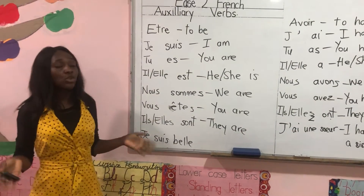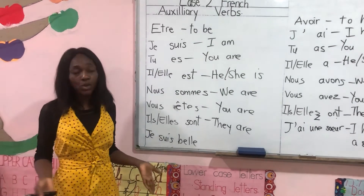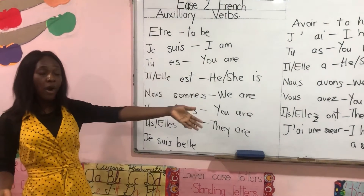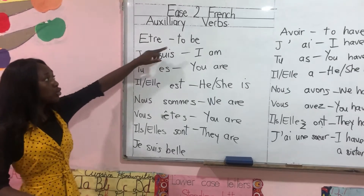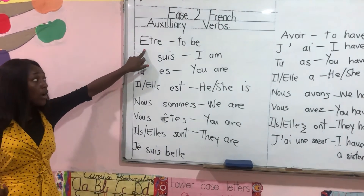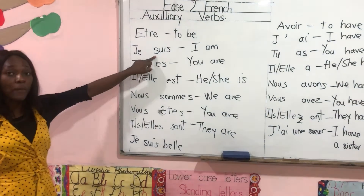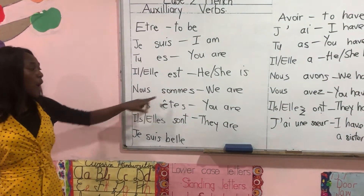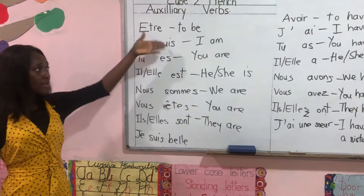I want the class to end here. In our next class we'll make lots of examples using the verbs we have conjugated, être and avoir. In recap, the auxiliary verb to be in French is être. Conjugated in present tense: je suis, tu es, il est, elle est, nous sommes, vous êtes, ils sont, elles sont, and these are their meanings.